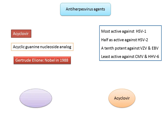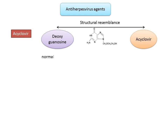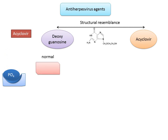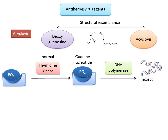Regarding the mechanism of action, acyclovir exerts its action because of its structural similarity to deoxyguanosine — the relevant structural part you can see on screen. Under normal conditions, the enzyme thymidine kinase combines phosphates with nucleosides such as deoxyguanosine and converts it to its nucleotide form, guanine nucleotide, which is then incorporated into DNA via DNA polymerase.